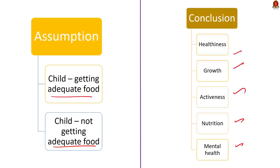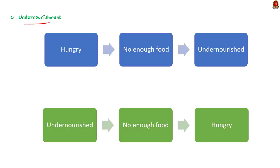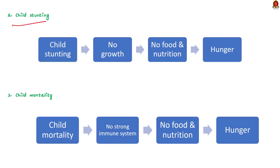Coming back to the question: read statement 1 — 'Undernourishment.' Will it be an indicator in the Global Hunger Index? Yes, probably. If a person is staying hungry, he is not getting enough food and not enough nutrition. If a person is undernourished, it means he is not getting enough food and is staying hungry. So the first statement is definitely correct. The second one is 'child stunting' — it means low height for age, related to growth. Apart from genetic or hereditary reasons, if a child is stunted, it means he is not getting enough food and nutrition necessary for growth. This is also an indicator of hunger.